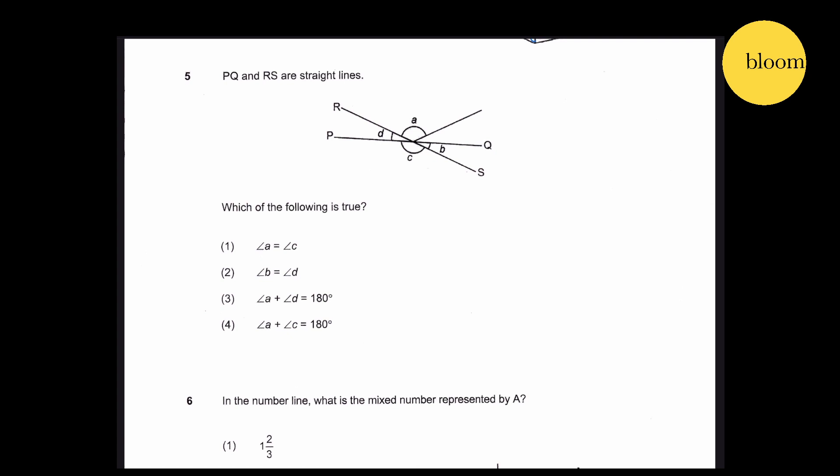Question 5: PQ and RS are straight lines. Which of the following is true? Checking the angles — it is more than 180°. Therefore, this is the answer.